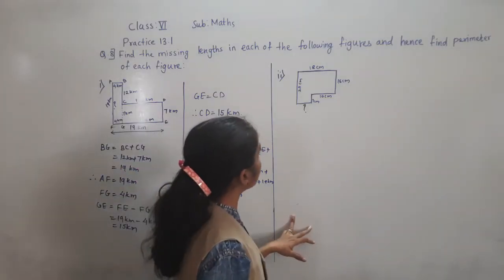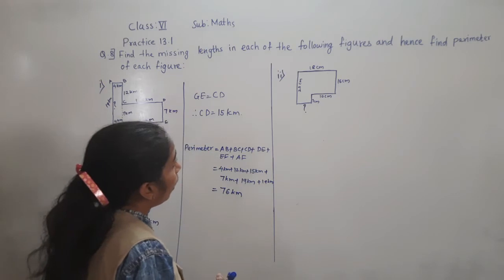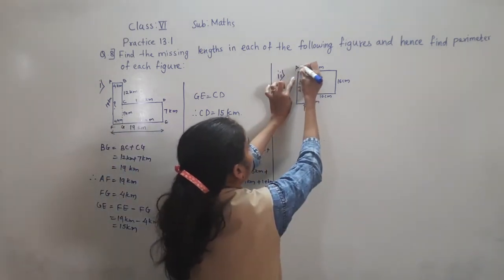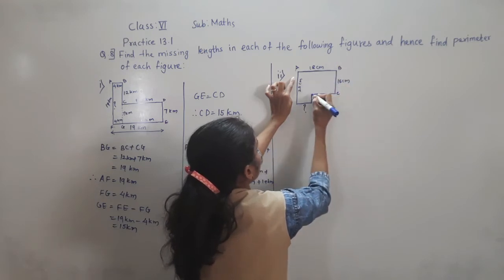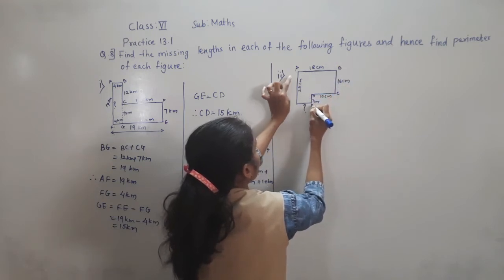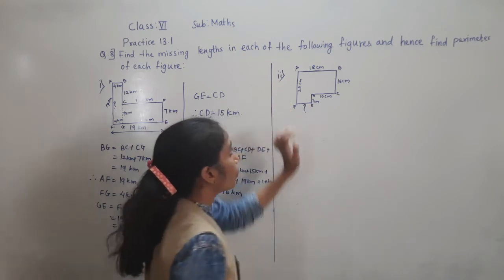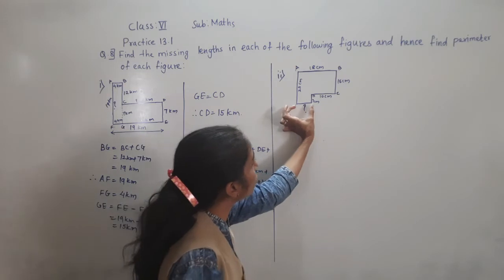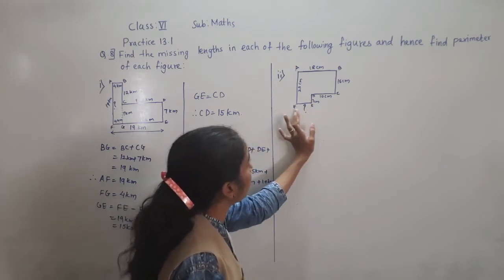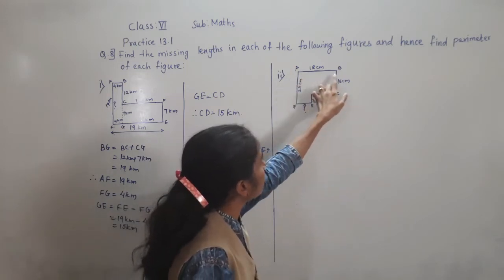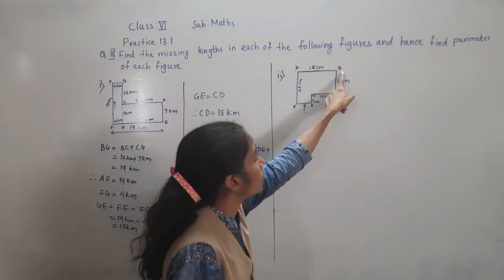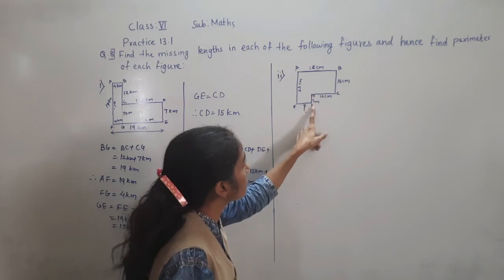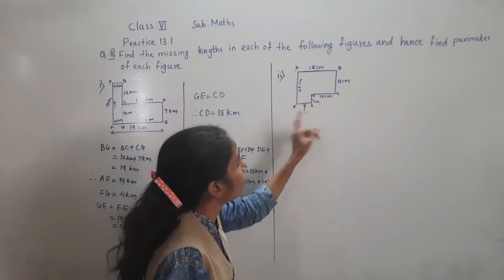Let's solve the next question. In this figure, I will label the points: A, B, C, D, E, F, G. We have to find the perimeter of this figure. For that we should know the length of EF. AB is given 18 cm, BC is 16 cm, CD is 10 cm, DE is 7 cm, but EF we don't know.